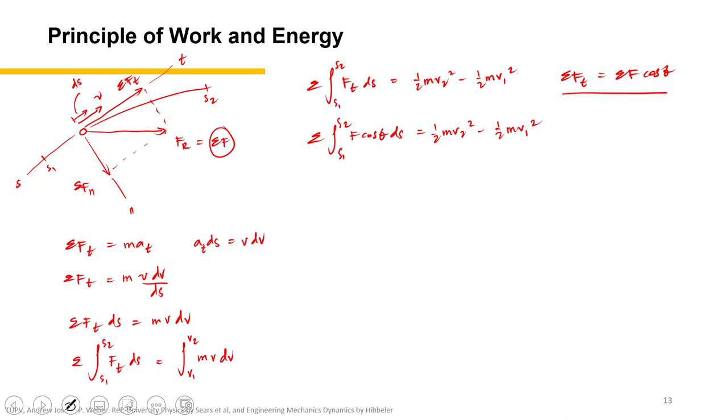Now the left part of the equation seems familiar, and that is equal to the work done from point 1 to point 2. It is equal to work from point 1 to point 2, which equals one half m V2 squared minus one half m V1 squared. This equation represents the principle of work and energy.